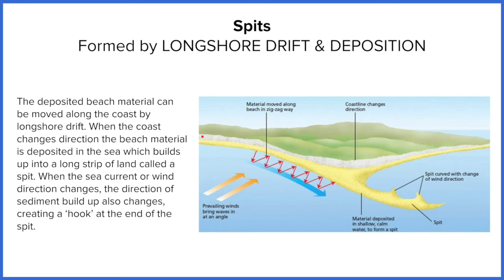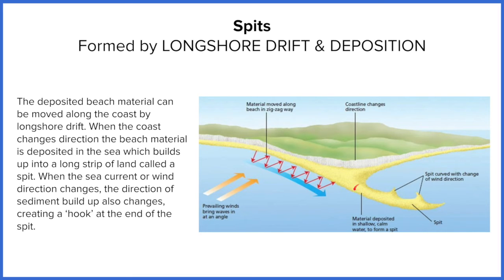When longshore drift reaches a change in coastal direction — here we've got the coast running roughly west to south, then starting to move northeast — the wind direction doesn't change along with the coast. So instead of longshore drift continuing around the corner, it starts moving out into the sea. There's no beach there, it was once water, so material gets deposited into the sea and builds up over time until it crests above the water level. Then longshore drift continues along that newly developed bit and deposits more material into the sea, until it develops a thin bar of land sticking out from the coast — that is a spit.